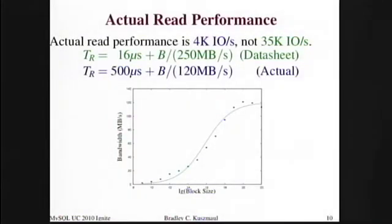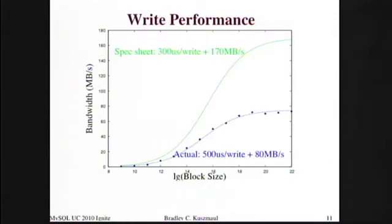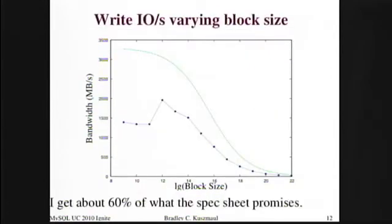I did a curve fit to try to find an actual model. The actual startup time looks more like 500 microseconds, or half a millisecond, and about 120 megabytes per second once you're going. It's nothing like 35,000 IOs per second — I was getting about 4,000 IOs per second. Write performance had a similar story: also about a 500 microsecond startup time and I got 80 megabytes per second. The spec sheet said I should expect 300 microsecond startup time and 170 megabytes per second.